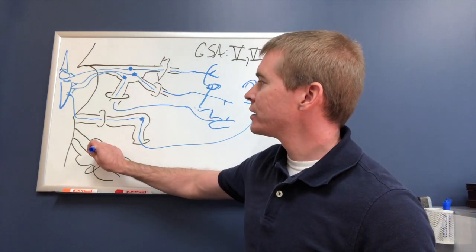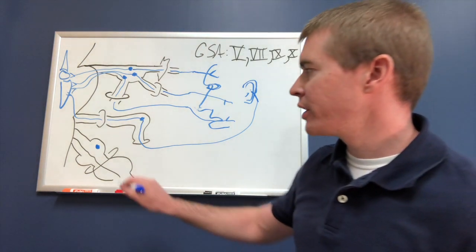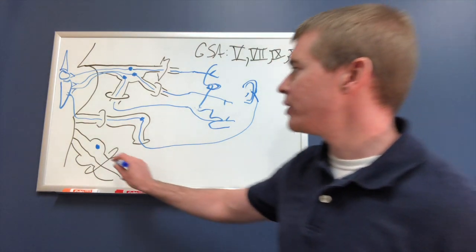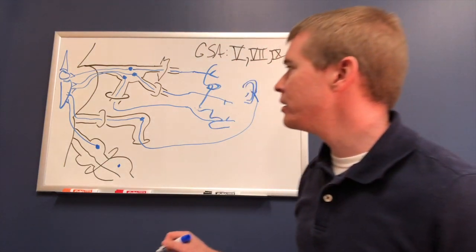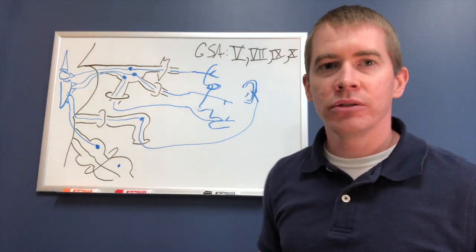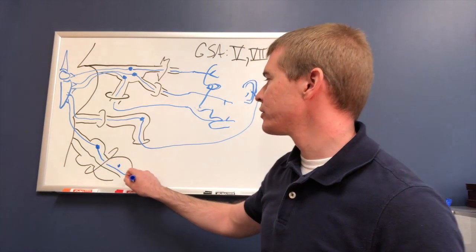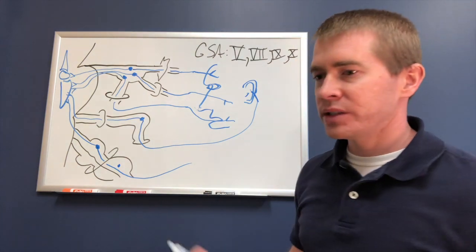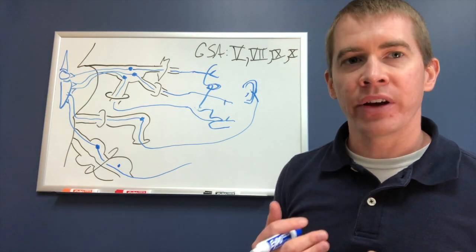Now, the GSAs in glossopharyngeal are primarily in the superior ganglion, but there are also some in the inferior ganglion, depending on the function. These travel and synapse on the spinal nucleus, just like all the others. They travel through the jugular foramen.